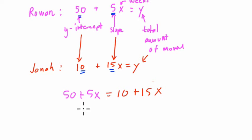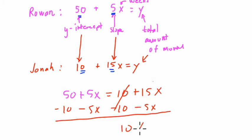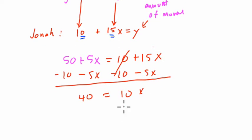So we solve for x here. I'll subtract 5x from both sides, and subtract 10 from both sides. So we'll balance my equation. Let's cancel out. And 10x is going to be equal to 40. And if we divide both sides by 10, x equals 4. This means after four weeks, they'll have the same amount of money.